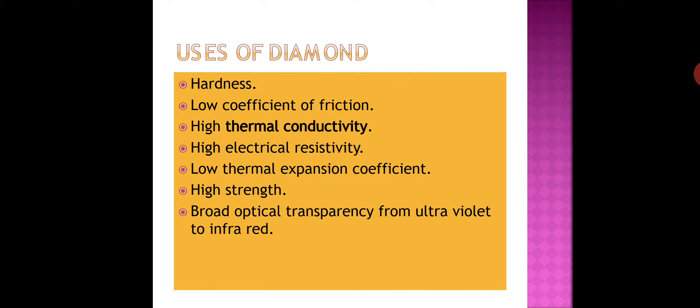Uses of diamond: diamonds are used in glass cutting, rock drilling. Diamond has properties of electric resistivity, low thermal expansion coefficient, high strength, and broad optical transparency from ultraviolet to infrared. Diamond dust is used in polishing other diamonds, and diamonds are used to make windows giving protection from radiation in space and in artificial satellites.